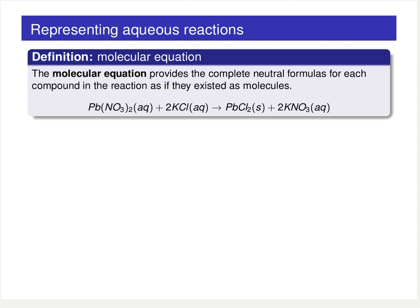Let's look at one more example. In this case we're going to mix potassium chloride with lead nitrate. Following the same procedure, we can write out the chemical reaction equation, follow the table, and come up with the predicted products. When we write out a chemical reaction equation keeping those ionic compounds in their neutral form, what we're doing is writing out the so-called molecular equation — providing the complete neutral formulas for each compound as they exist in their molecular form.